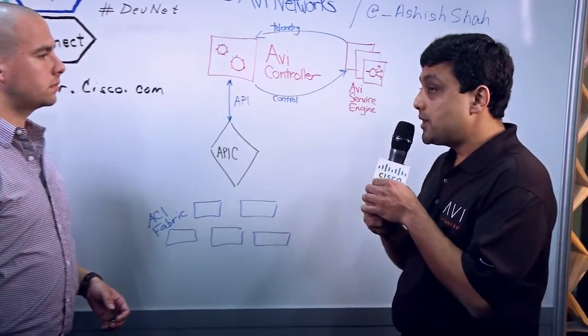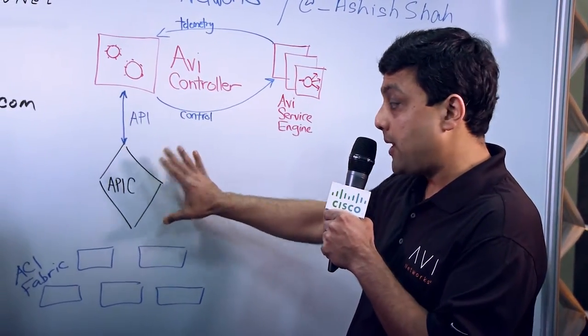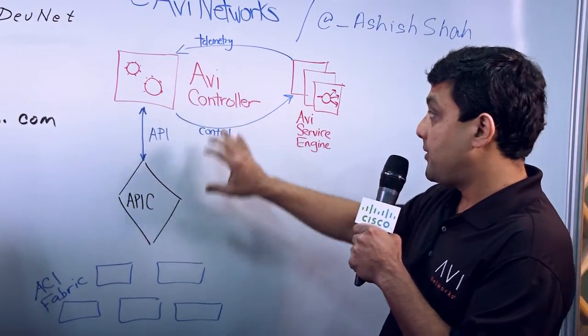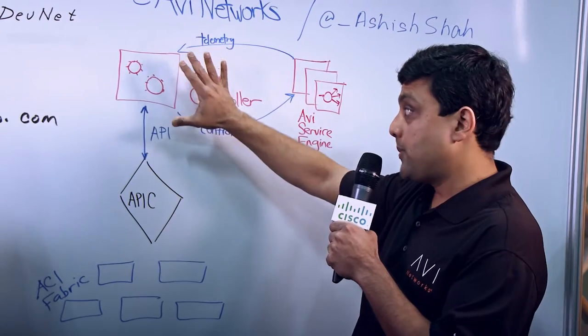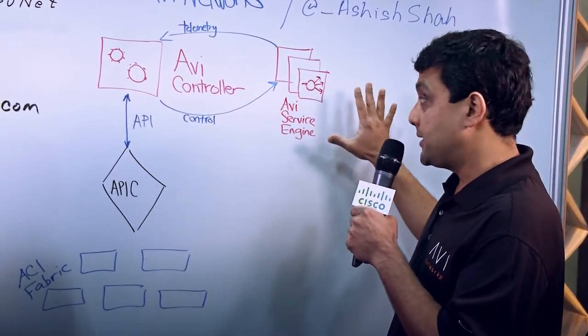Sure. So as you can see here, AVI's architecture is very similar to APIC's architecture. We have a central controller in front of APIC, which is managing the distributed ACI fabric. Similarly, on the AVI side, we have a centralized AVI controller, which is managing the lifecycle of the distributed software load balancers, which are deployed on UCS or any other x86 servers.